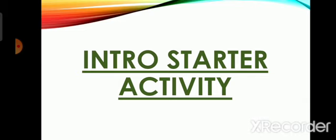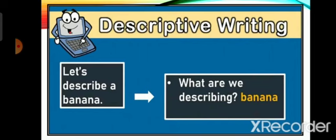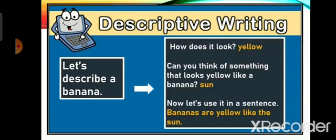Let's describe a banana first. Can you tell me how does it look? Yes, it looks yellow. Can you think of something else that looks yellow like a banana? You may write Sun. Now let's use it in a sentence: bananas are yellow like the Sun. Here we are comparing the banana to the Sun because both have the same color, and when we cut it, it looks like a Sun.